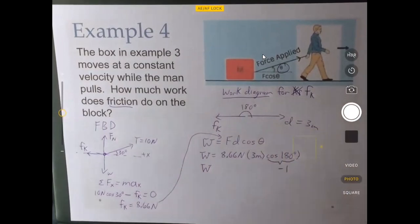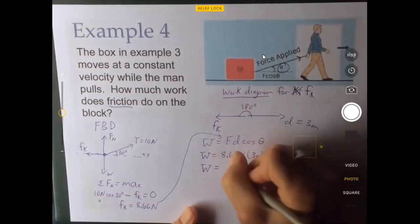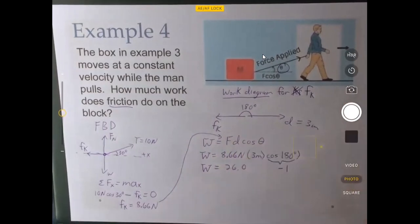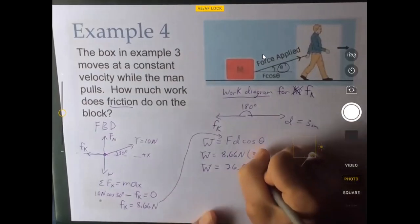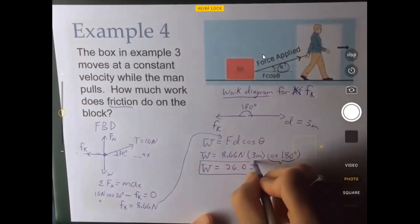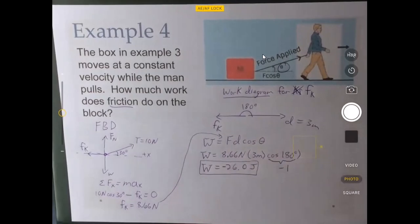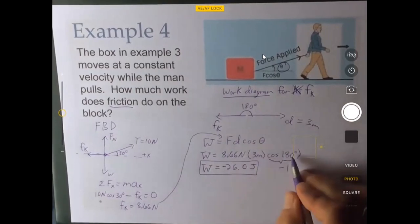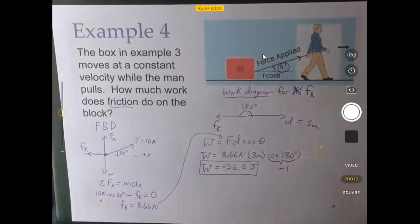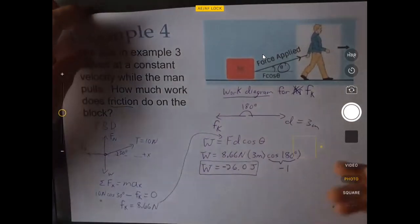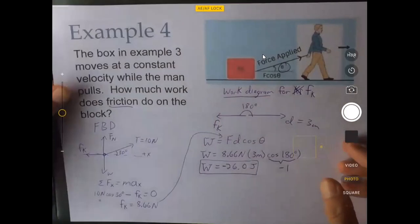So 8.66 times 3 gives us 26.0. So 8.66 times 3 is 26, but times cosine of 180 gives us a work done by the friction of negative 26 joules, which is the same size as the amount of work done by the man's force or the tension, as we were calling it.